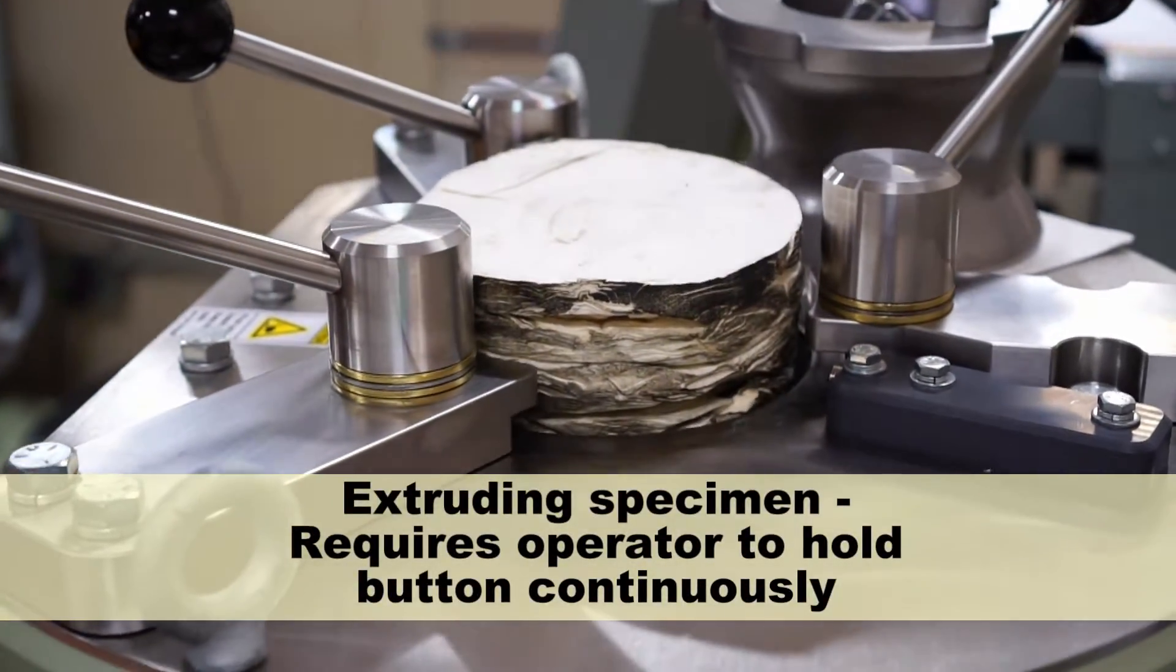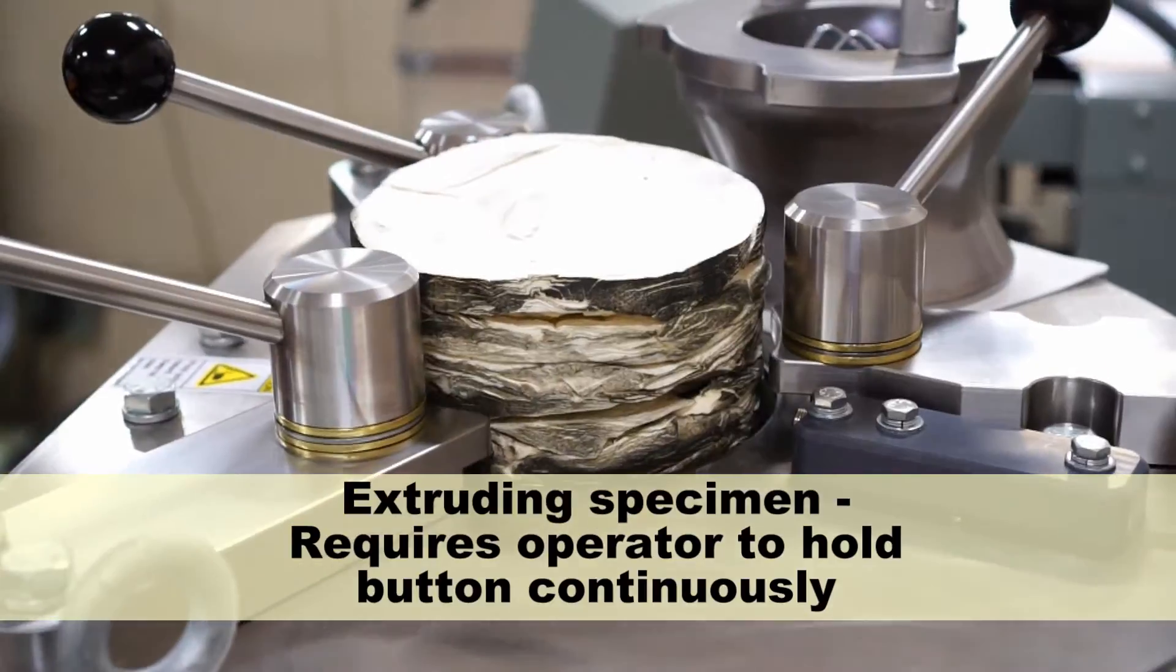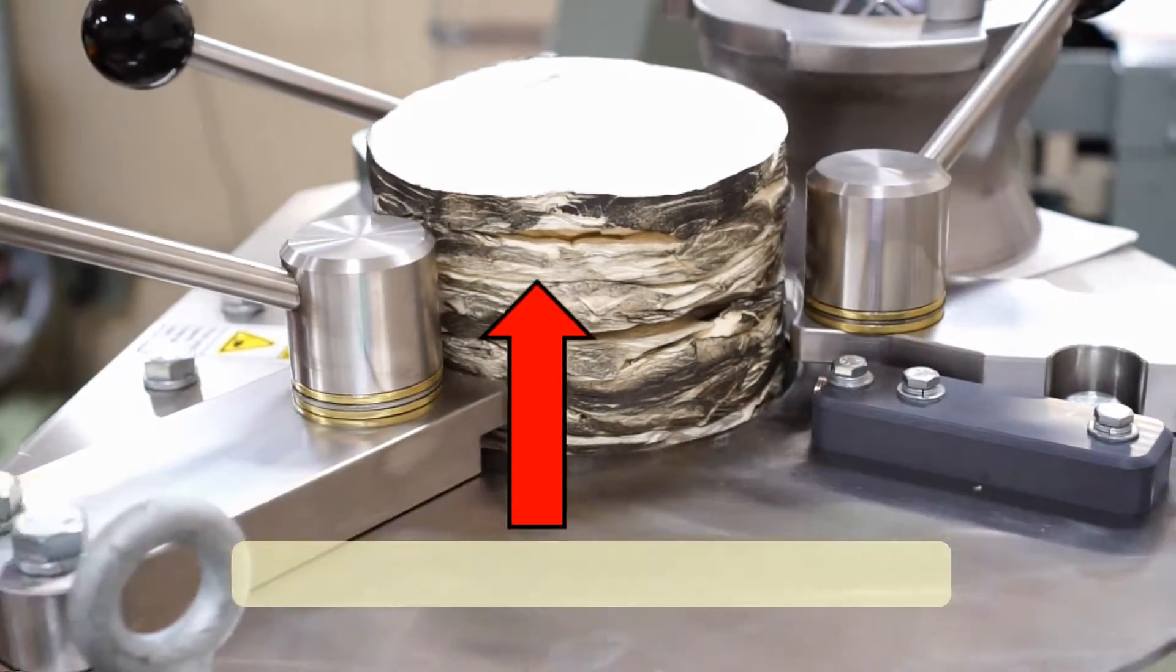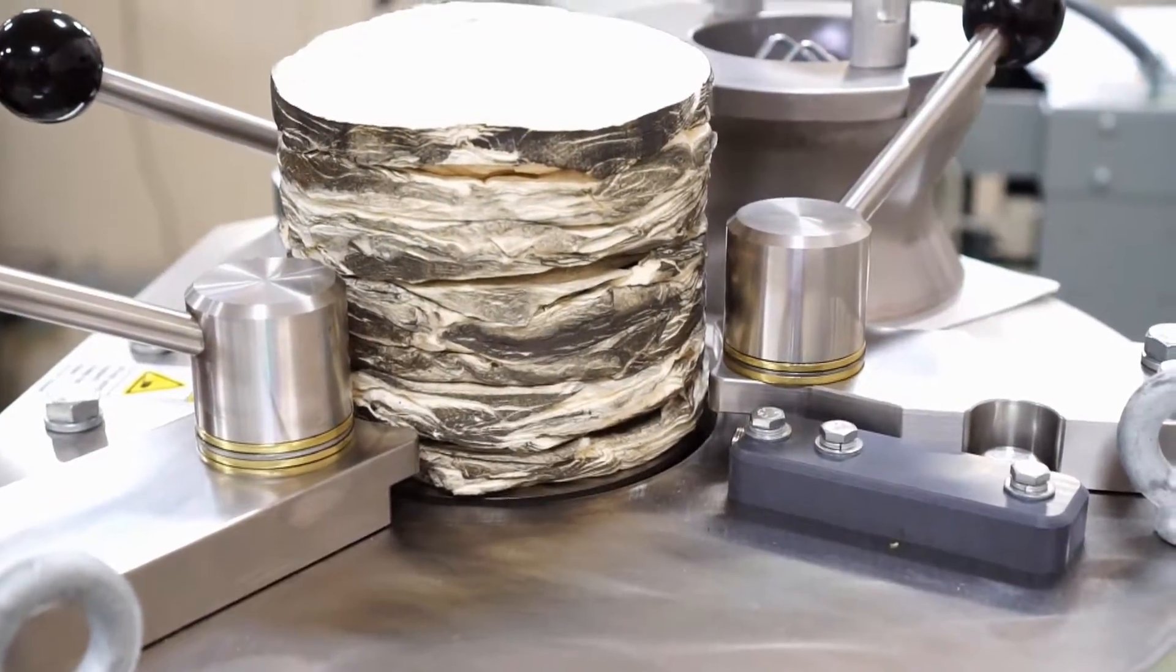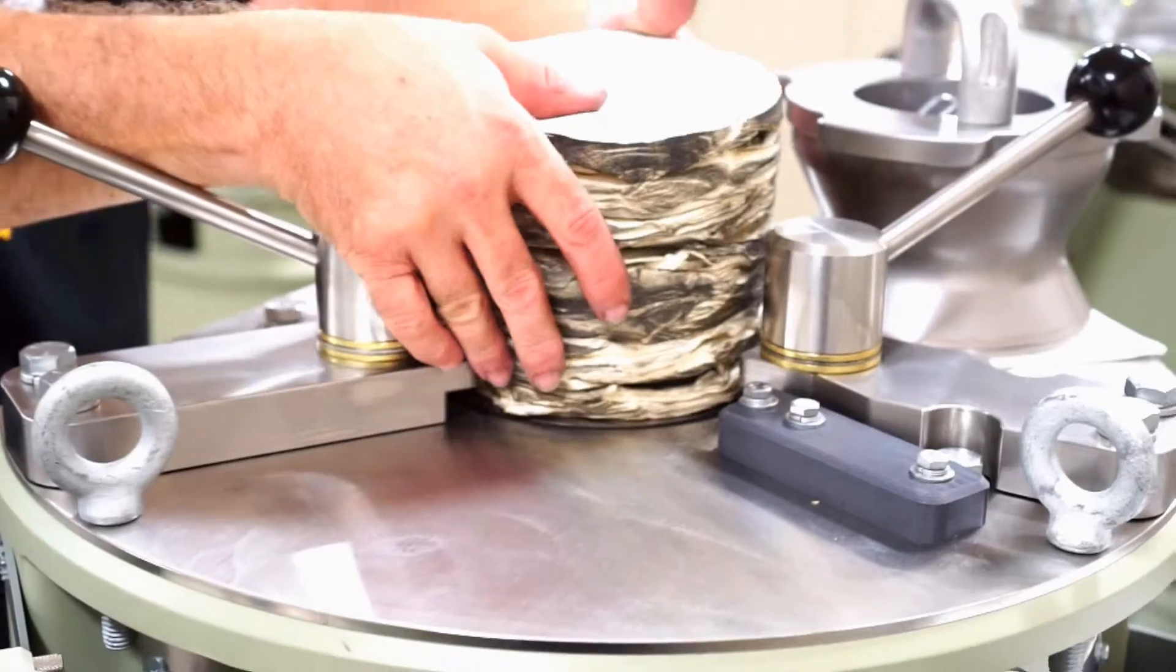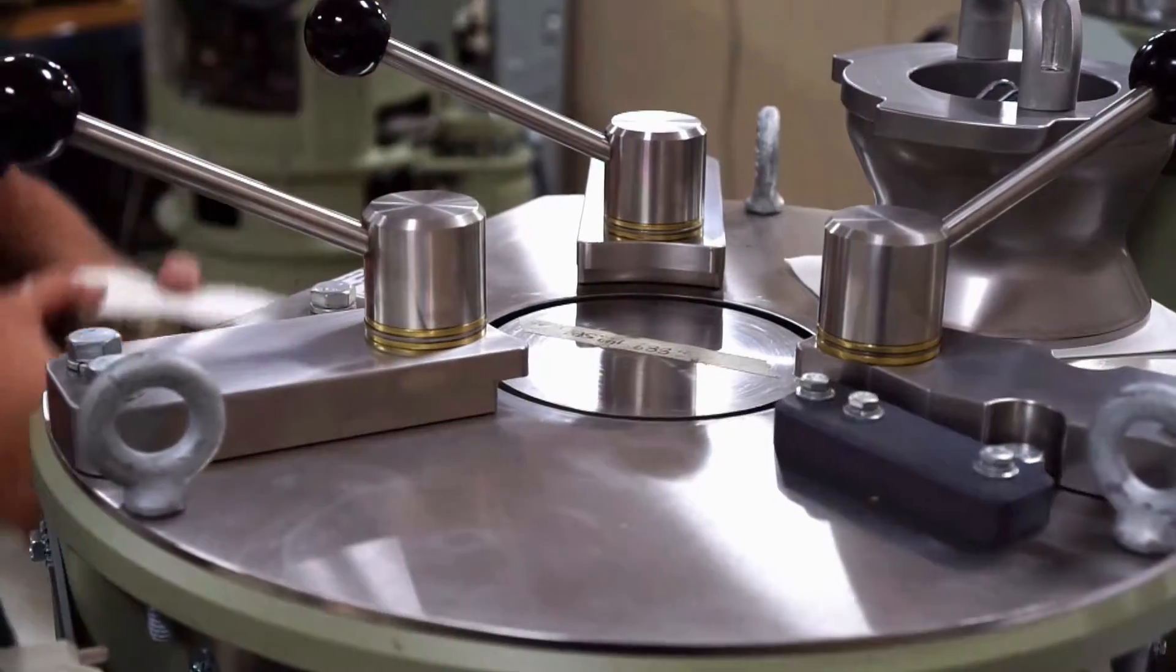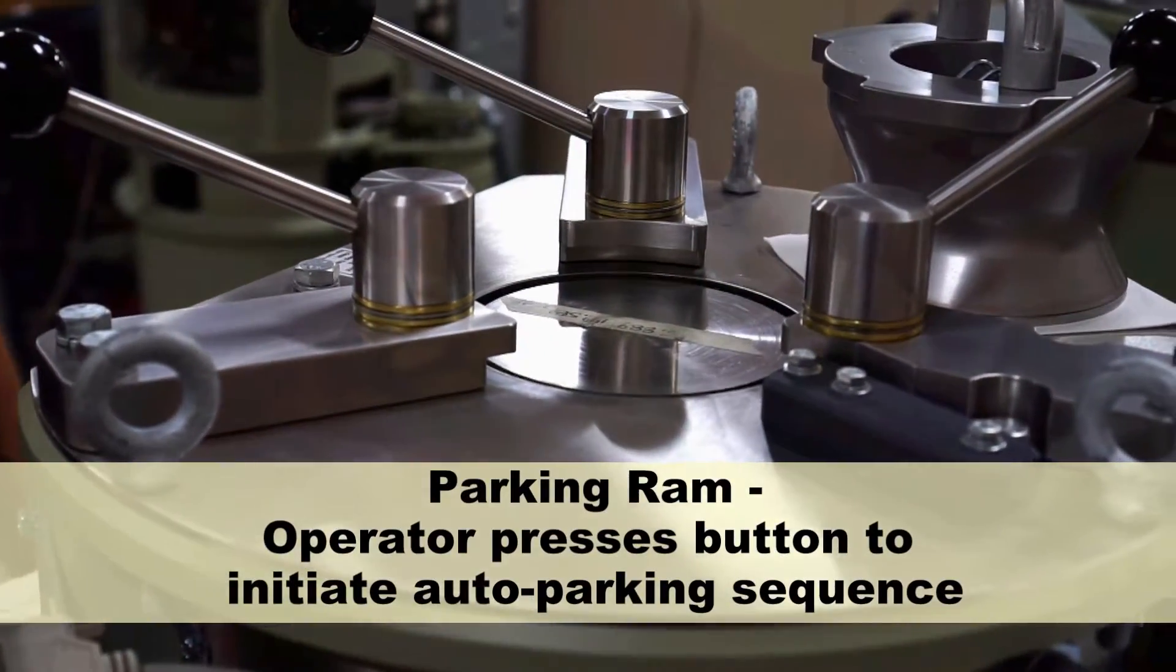The specimen is extruded from the mold by pressing and holding the up button. If the operator releases the button, the machine motion will stop immediately. The specimen is pressed out of the mold and emerges from the top of the machine. When the specimen has been fully extruded, it is removed and set aside.